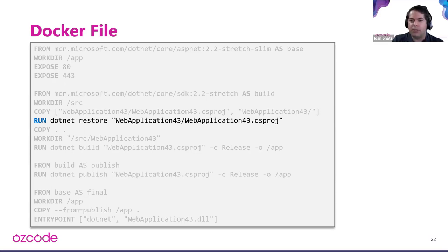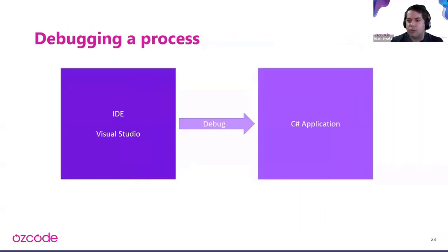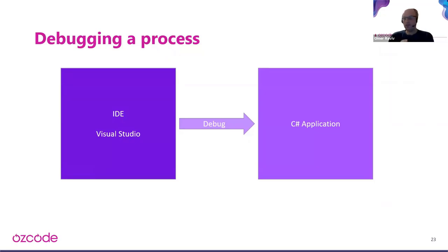We're defining what's the equivalent of a VM programmatically inside the Dockerfile. Every line in the Dockerfile creates a new layer or checkpoint, so it's repeatable — just like code. It's very easy to work with from a DevOps perspective as well.